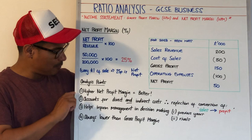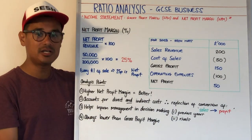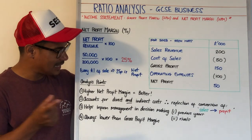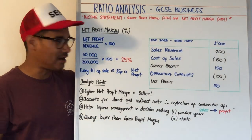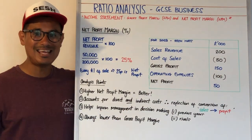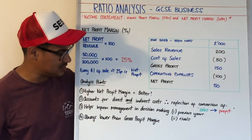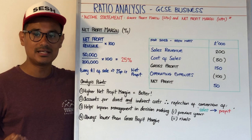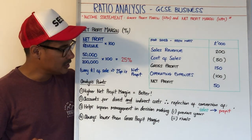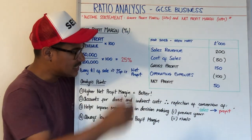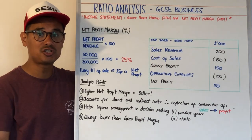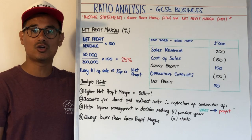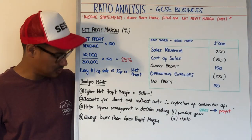Analysis tips. Number one is that you want your net profit margin to be as high as possible — the higher the better. Number two is it accounts for both direct costs — that's cost of sales — and indirect costs — that's operating expenses. So direct and indirect costs are both included, meaning it's a good reflection of the conversion of sales into profit as you strip away all those costs.